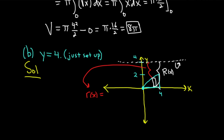Let's find each of these. Big R of x is the full distance — no matter where you put the rectangle, it's always going to be equal to 4. Super important. It's always the full distance from the far end to the axis. Little r is that tiny inner distance. To get the red distance, you take the big distance, 4, and subtract the orange distance, which is the square root of x. So little r of x equals 4 minus the square root of x.